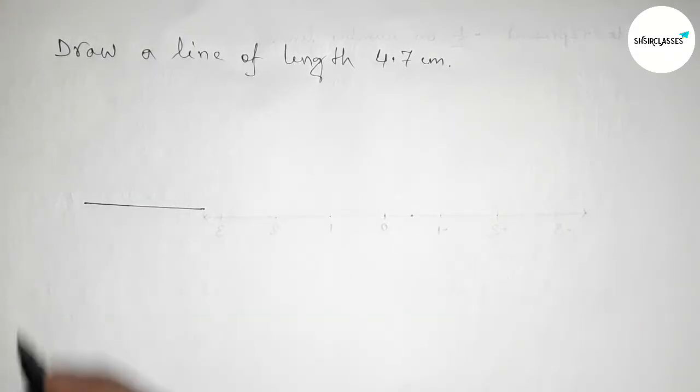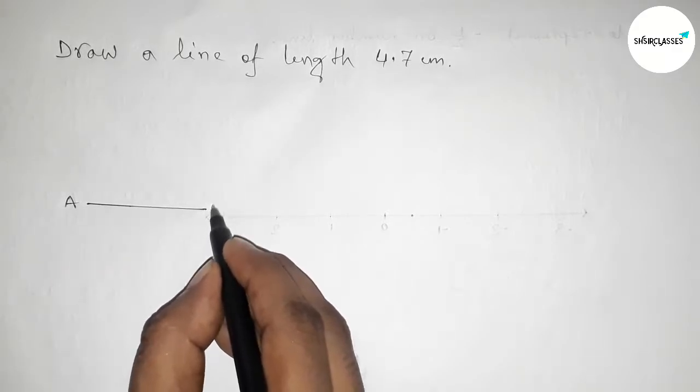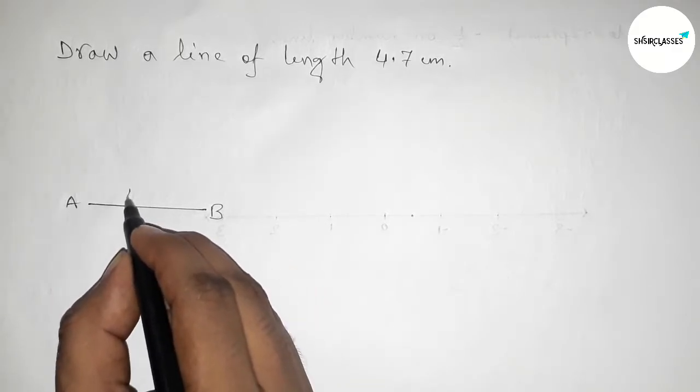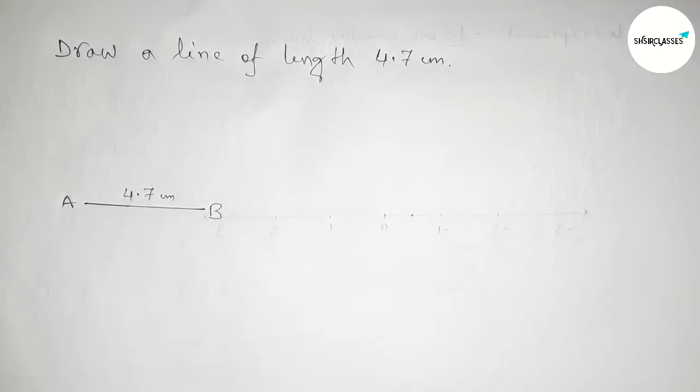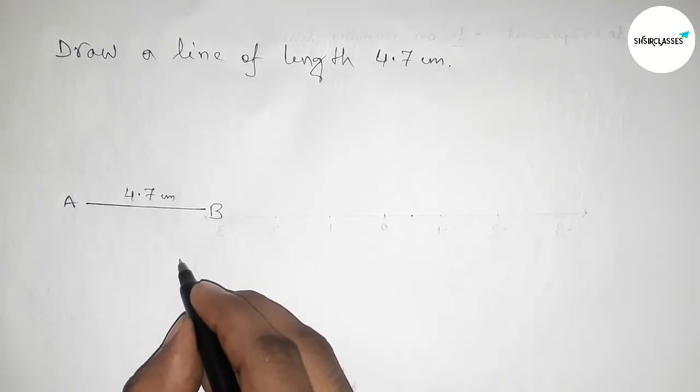So now taking point here A and here B. So AB is a line of length 4.7 centimeter.